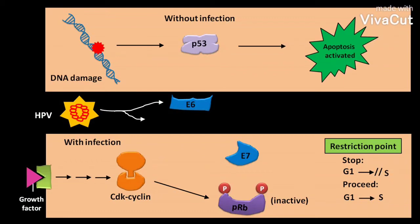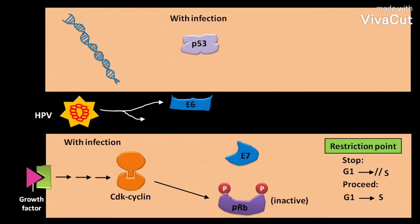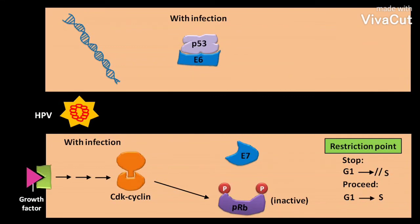But when the HPV infection occurs, the viral protein E6 binds to the host cell P53. This binding causes the degradation of P53. In such a condition, if any radiation or chemical causes DNA damage, then no P53 is available to activate apoptosis.